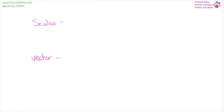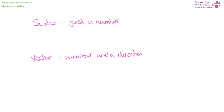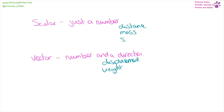A scalar quantity is just a number. A vector quantity is a number and a direction. For example, distance is scalar, but displacement is vector because it's distance in a direction. Mass is scalar, but weight — which is your mass upon the Earth — is vector. Speed is scalar, but velocity, which is speed in a certain direction, is vector. Acceleration and force are both vector, and momentum is also vector.